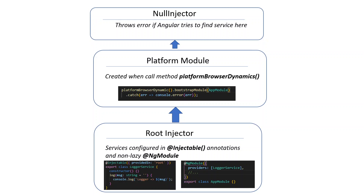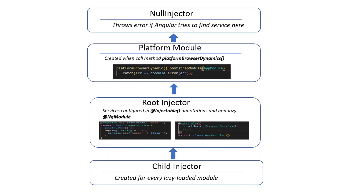If services are provided in a lazy module, Angular will create a separate child injector for each lazy module. That means if you have multiple lazy modules and you provide services in them, each will create a separate instance of that service, which is not shared across modules.